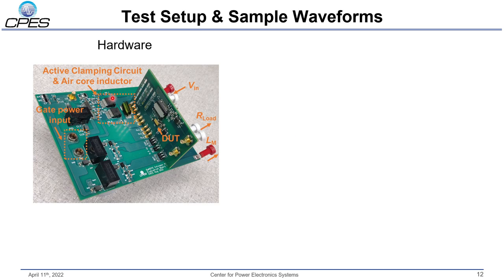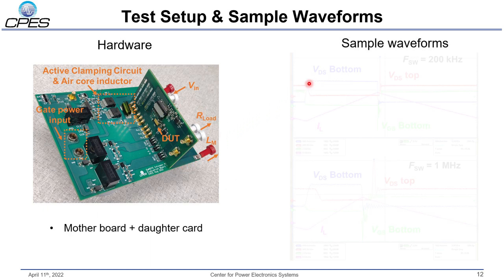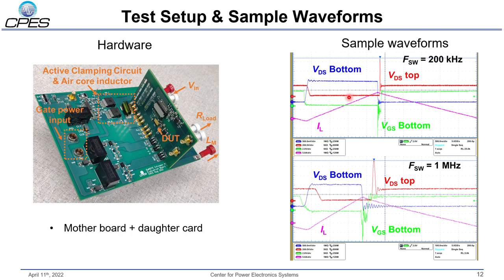Here is our test board. We have the active clamping circuit, two through-holes to mount power resistors for energy dissipation, and an air core inductor to trigger the high voltage overshoot. There is also a motherboard with a DUT card that inserts into it, designed to accommodate different package strategies from different manufacturers. Sample waveforms confirm the setup with ACC works well — at both 200 kHz and 1 MHz, we obtain the desired waveform where VDS rises sharply and then quickly returns to bus voltage.